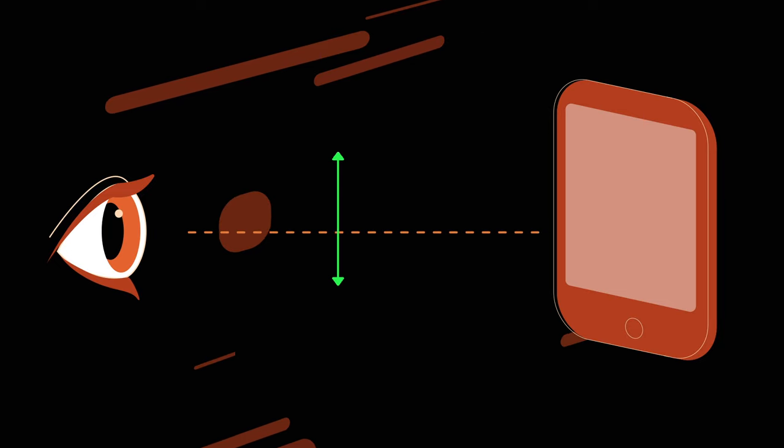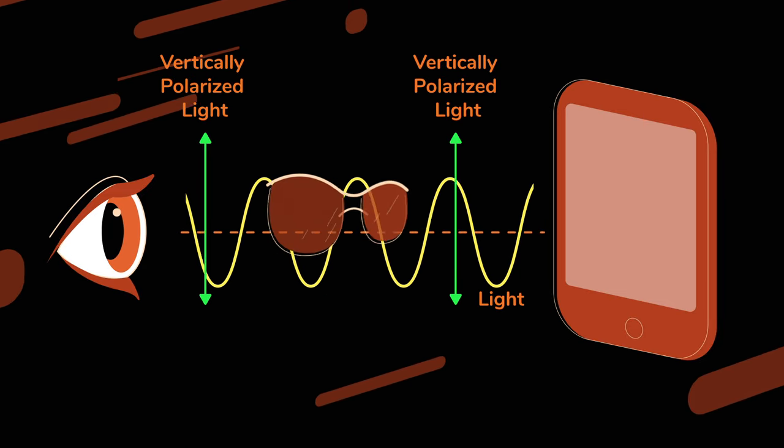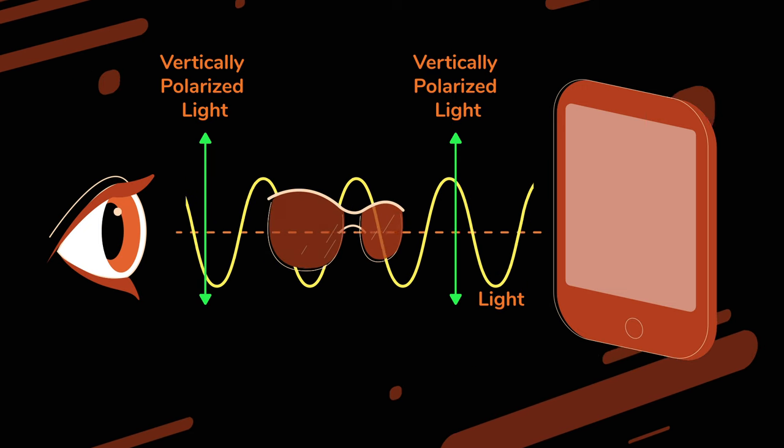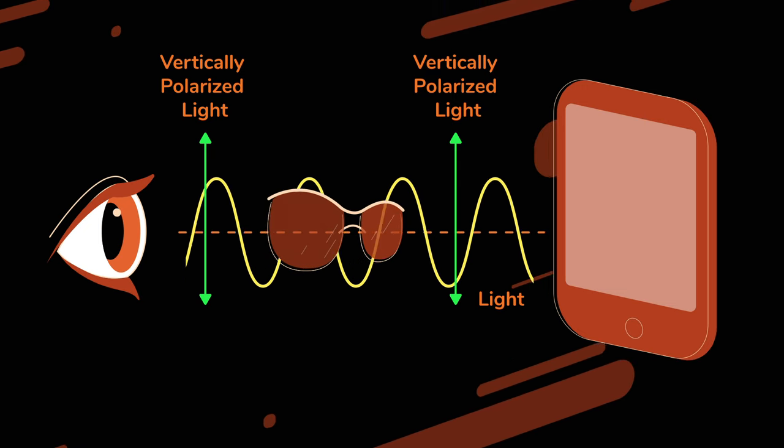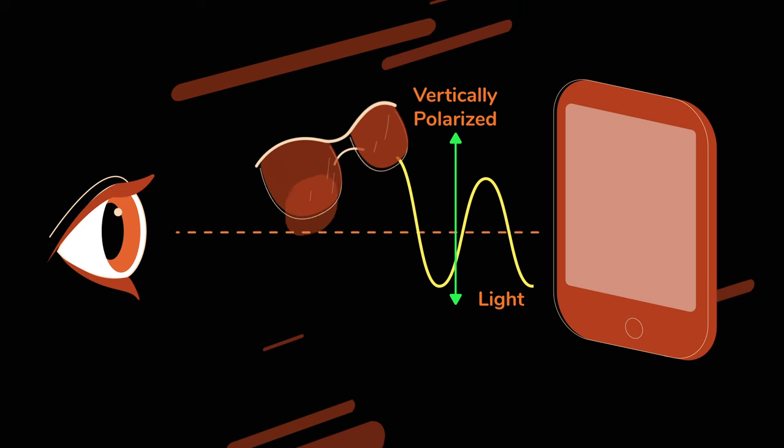For example, light from your phone is vertically polarized. Your polarized sunglasses are a polarized filter. Here, they let vertical polarization through. If we rotate them, almost all the polarized light gets blocked.